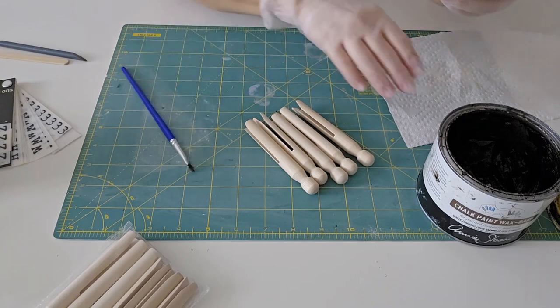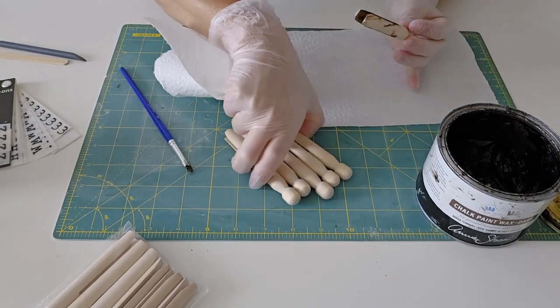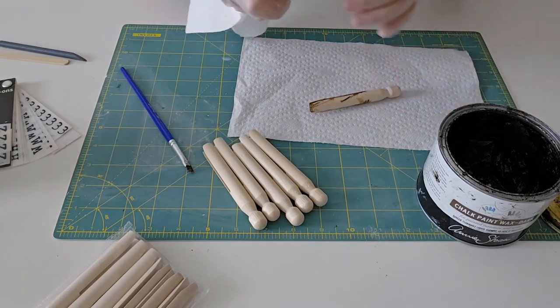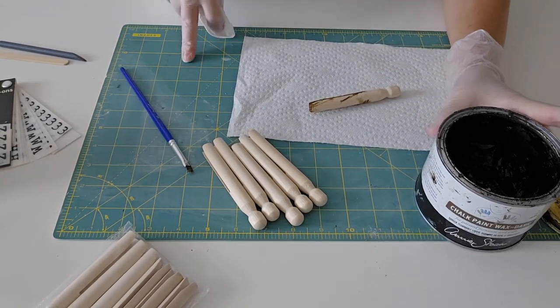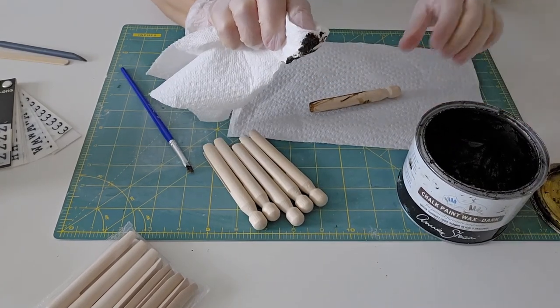I'm going to use a paper towel to quickly do the rest and I like to have a work surface that is easy to wipe up. That's what this mat is. I'm going to add a little bit of wax onto a paper towel.